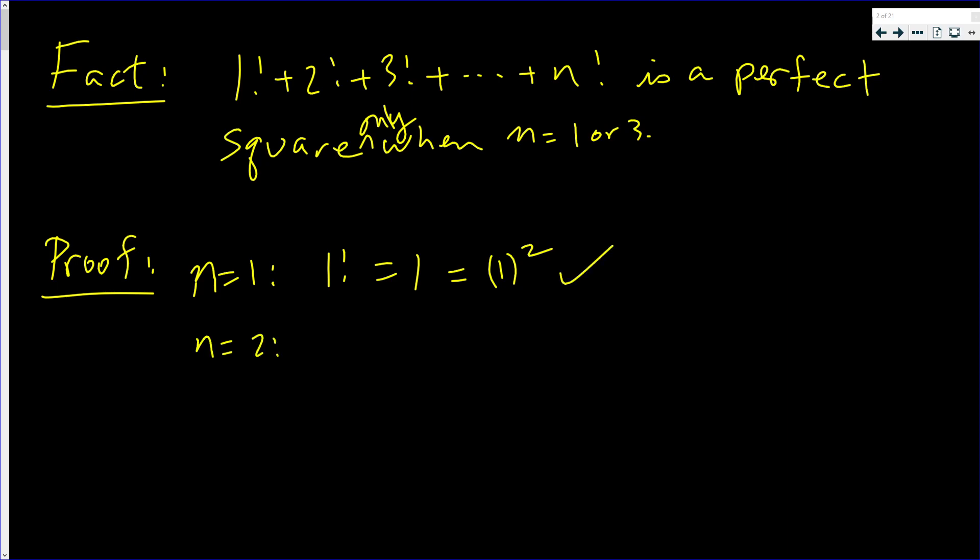N equals two, well that's one factorial plus two factorial, which is one plus two, which is three. That does not work.